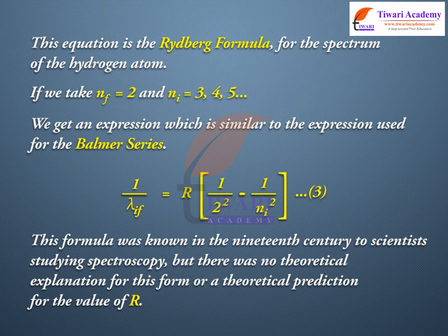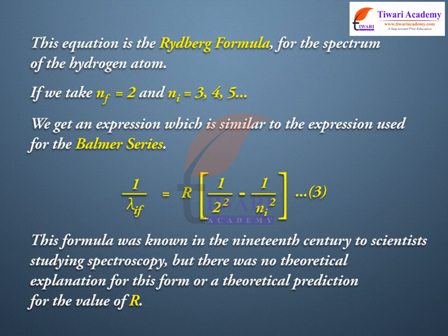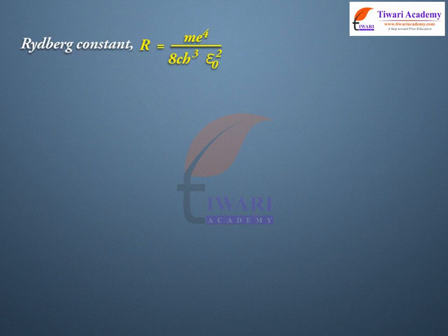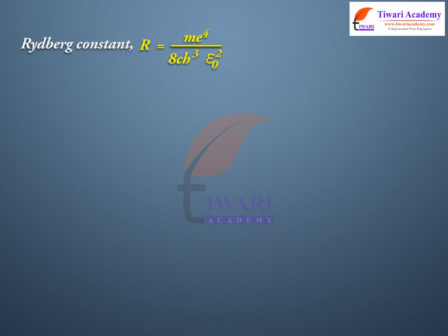This formula was known in the 19th century to scientists studying spectroscopy, but there was no theoretical explanation for this form or a theoretical prediction for the value of R. The Rydberg constant R = (me^4)/(8c*h^3*ε0^2).